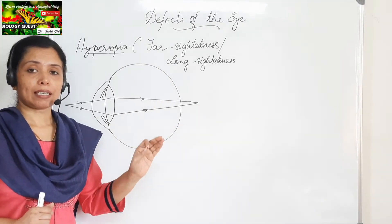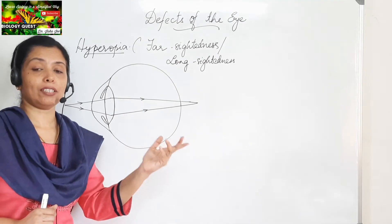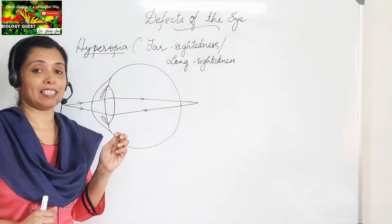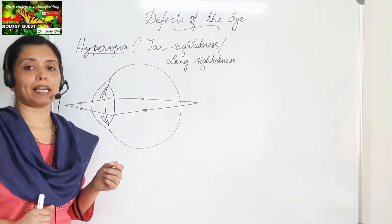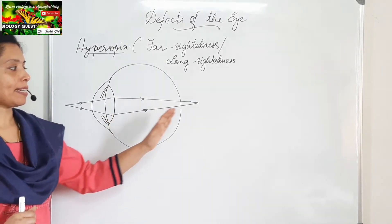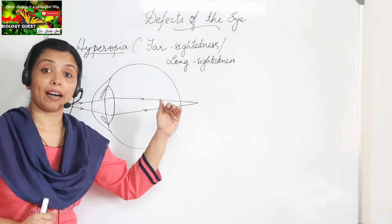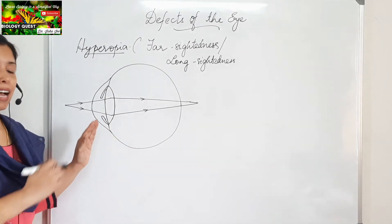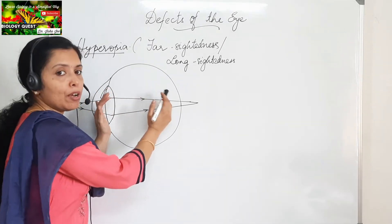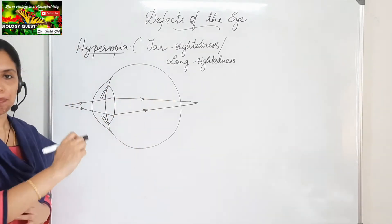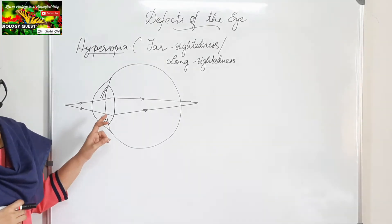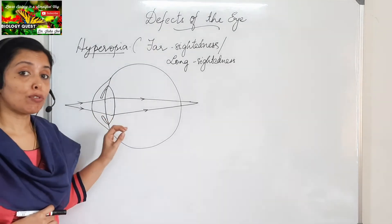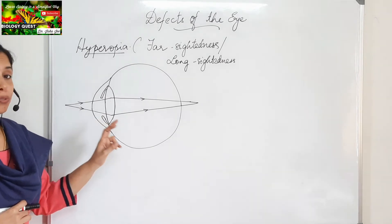Farsightedness is a condition in which the person is able to see distant objects clearly, but nearby objects become blurred. The image of the object is falling behind the retina. This may be due to two reasons: first, the shortening of the eyeball from front to back; and second, the lens has become too flat or less convex.